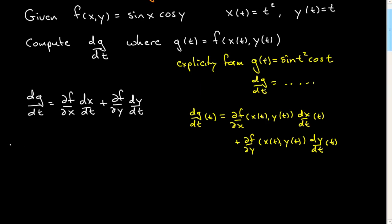So dg dt, I'm simply going to plug in here. We have to compute this derivative. So that is, it'll be cosine x, and I will write it out x of t. And then I simply have cosine of y of t. And then I have to multiply by dx dt. dx dt is simply 2t. That is this term.